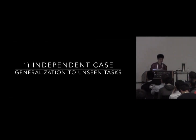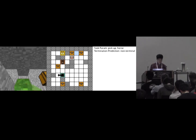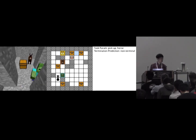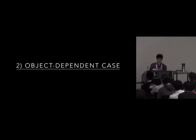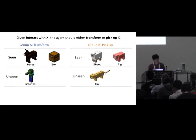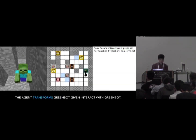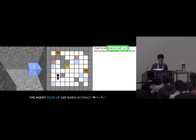The next video shows generalization to unseen combinations of parameters. For example, the particular combination 'pickup horse' was never presented to the agent during training, but our agent can understand the meaning of this task and solve it in a zero-shot way. This is a more complicated generalization scenario where the agent has to either transform or pick up the target object given the same task 'interact'. We divided objects into two groups — group A should be transformed and group B should be picked up — and defined analogies based on these groups. Our agent successfully generalizes over unseen target objects, correctly transforming or picking up targets depending on the object type.